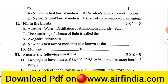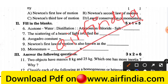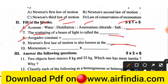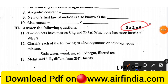Please search www.arfindia.com where PDFs are available, or check the description box for the PDF link. Question number 2 is fill in the blanks. The blanks involve: magneton, water, distillation, ammonium chloride, and salt. The answers include: the scattering of a beam of light is called [Tyndall effect]; the Avogadro constant; Newton's first law of motion is also known as [law of inertia]; and momentum equals mass multiplied by velocity.